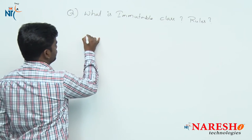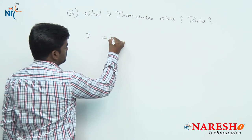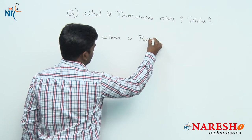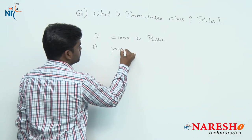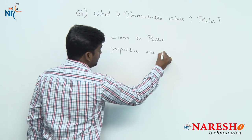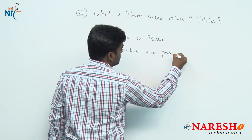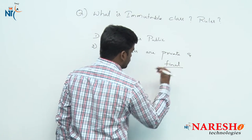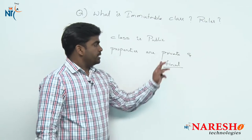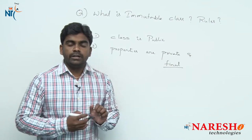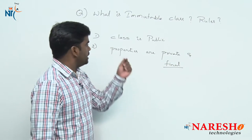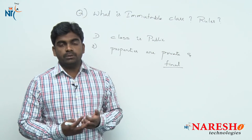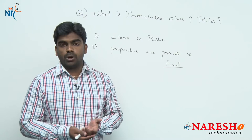The first rule: the class is public. The class is public means everyone can create an object — we know that. According to POJO rules, every class is a public class and the variables are private variables.